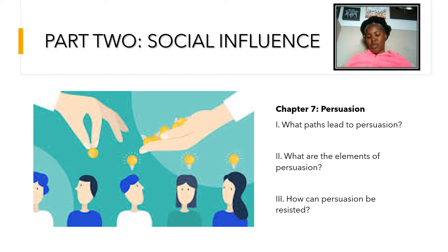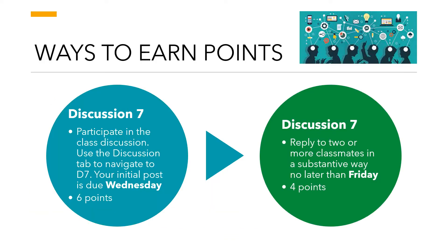This week you have one graded assignment: Discussion 7. You can earn up to 10 points for participating in our discussion regarding persuasion. Make your initial post by Wednesday for up to six points, then respond to two or more classmates by Friday for four points. Your posts should be substantive — just saying 'I agree' or 'I disagree' is not substantive. You want to have a real conversation, adding information from the textbook, videos, or other classes.